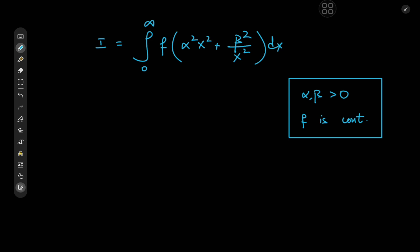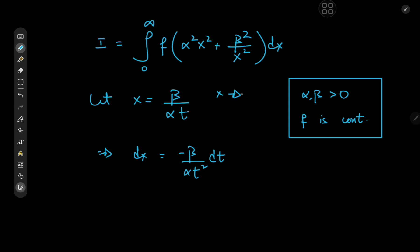How exactly do I want to begin solution development, or in this case the exploration? We have alpha squared x squared plus beta squared divided by x squared, so there's an interesting symmetry here regarding alpha and beta. What if I perform the substitution letting x equal to beta divided by alpha times t? This implies that dx equals negative beta divided by alpha t squared dt. Now as x approaches 0 from the right, we have t approaching infinity, and as x approaches infinity, we have t approaching 0.